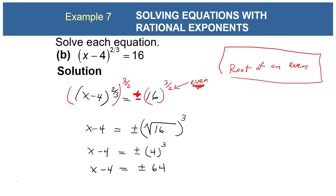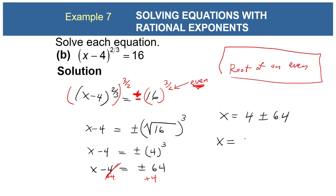Now add 4 to both sides. Be careful — make sure you put that 4 in front of the plus or minus, so this is 4 ± 64. We have two solutions: 64 + 4 = 68, or 4 - 64 = -60.